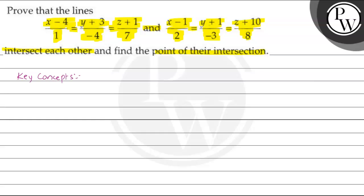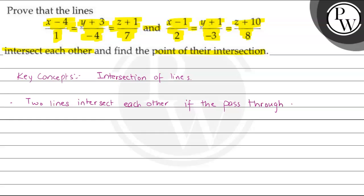The key concept involved in this problem is intersection of lines. Two lines intersect each other if they pass through a common point. Simply put, we need a point of intersection that satisfies both lines.